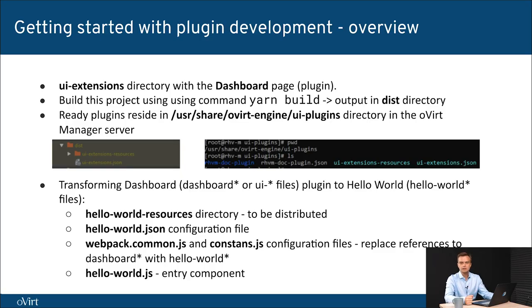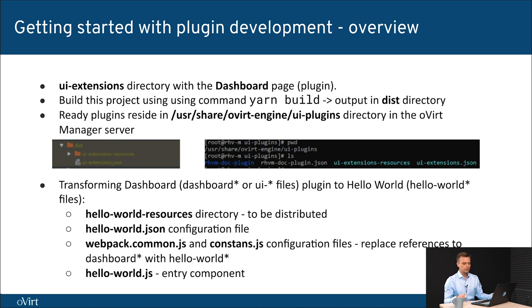You can notice that the same files reside also on the OVirt manager. On the left you have the disk directory contents, and on the right you have the contents of the plugins directory on the OVirt manager. We are going to transform this into a simple Hello World example. Everything with a dashboard prefix or UI prefix is going to be renamed to the Hello World resources - hello world JSON, etc. Hello World resources is a directory with the compiled files, and the JSON is the configuration file. These two artifacts need to be redistributed.